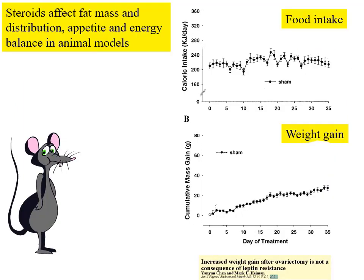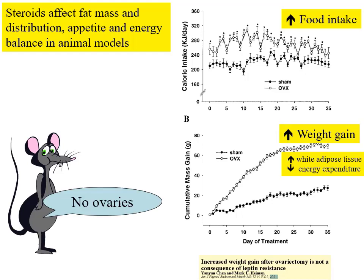Here's a good example of this interaction. Looking at the mass of a mouse over days: this is a control mouse, and we're looking at its food intake and weight gain over time. If we change its reproductive status — this is a female mouse — by taking out its ovaries, weight gain goes up immediately, and so does food intake.